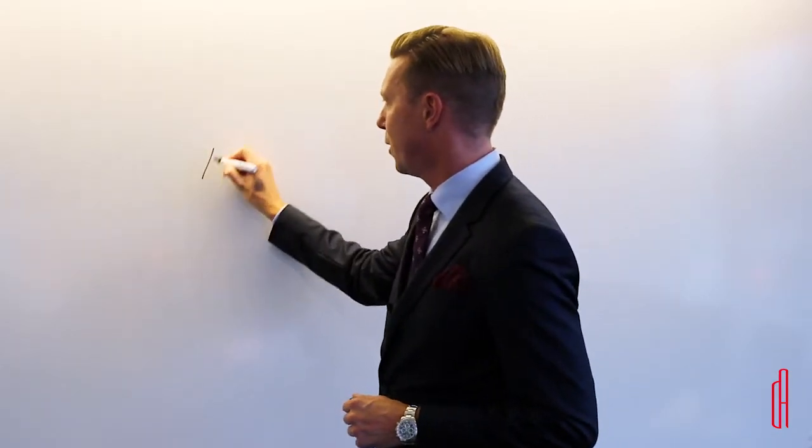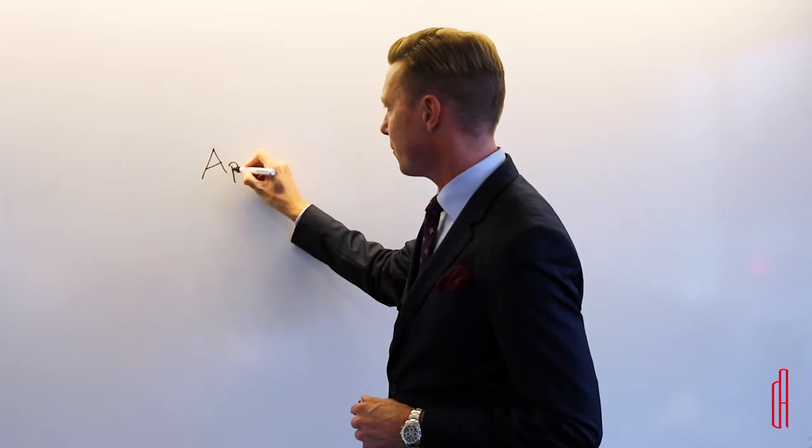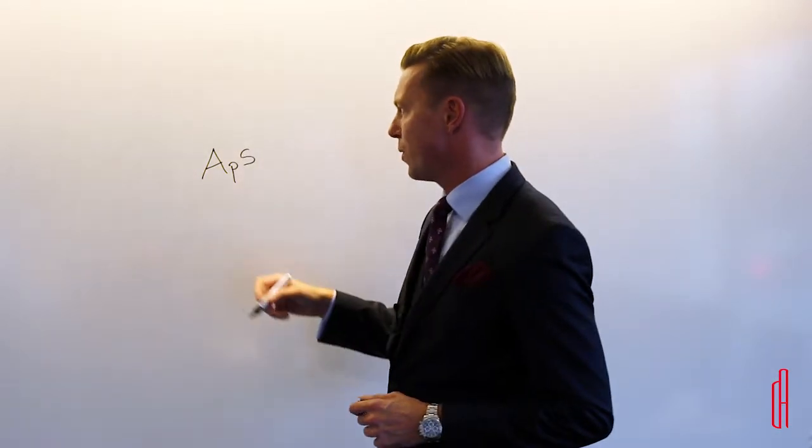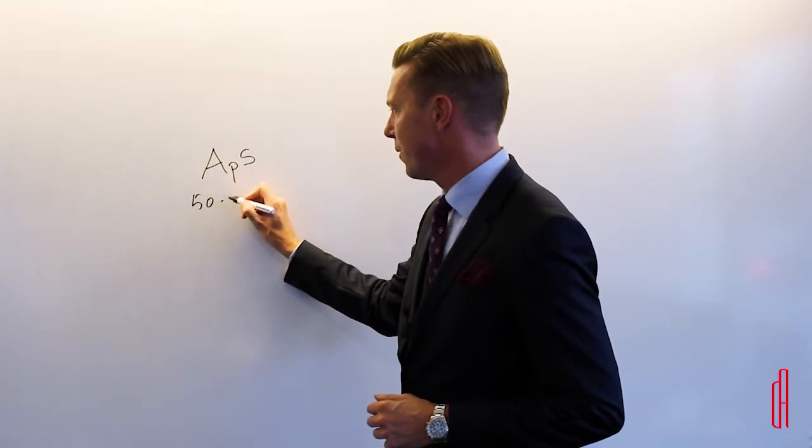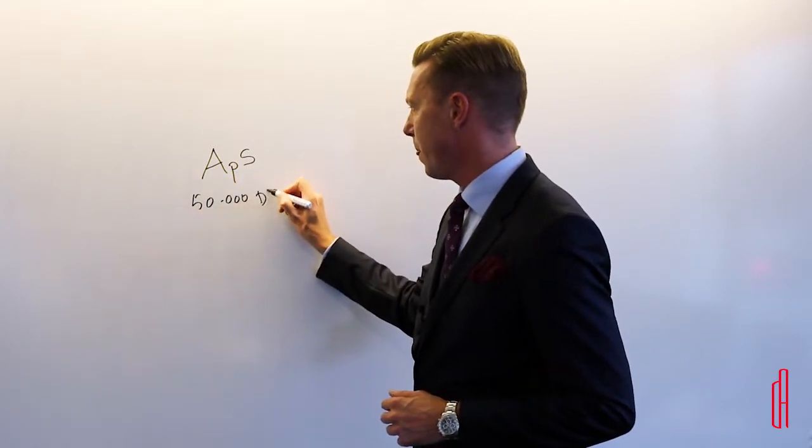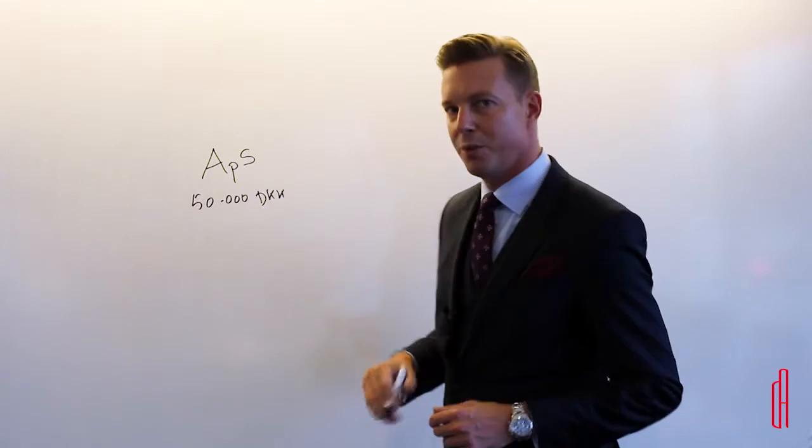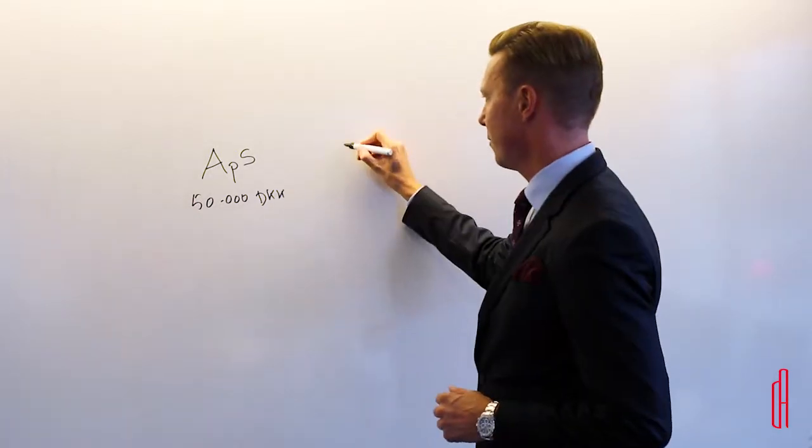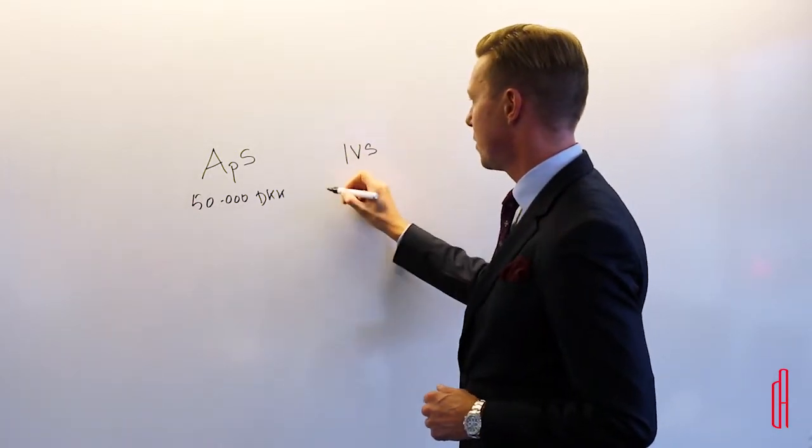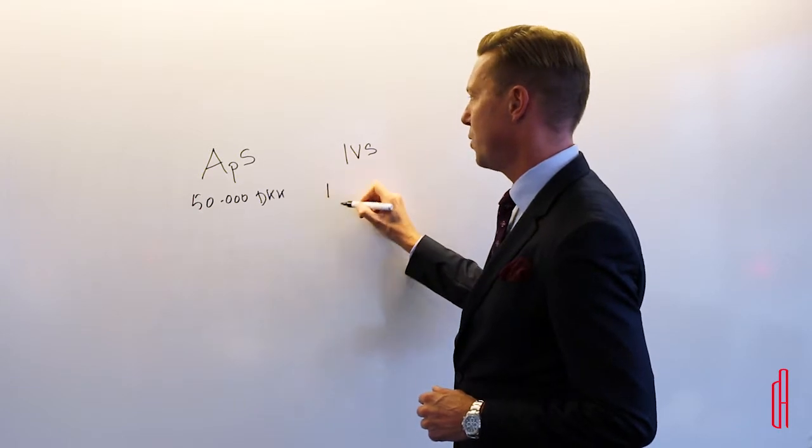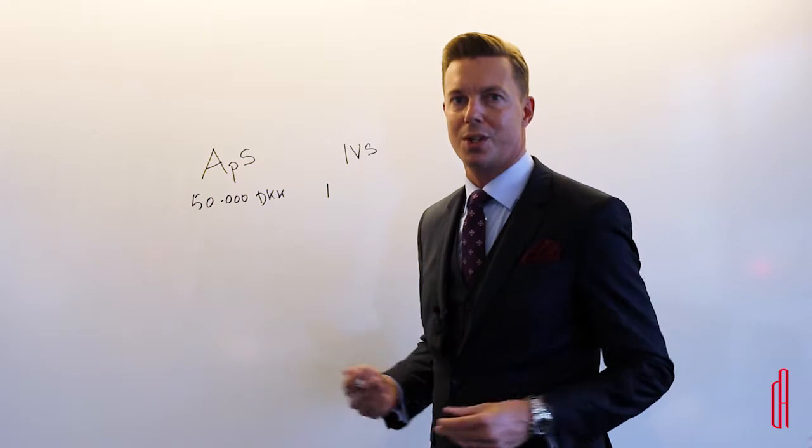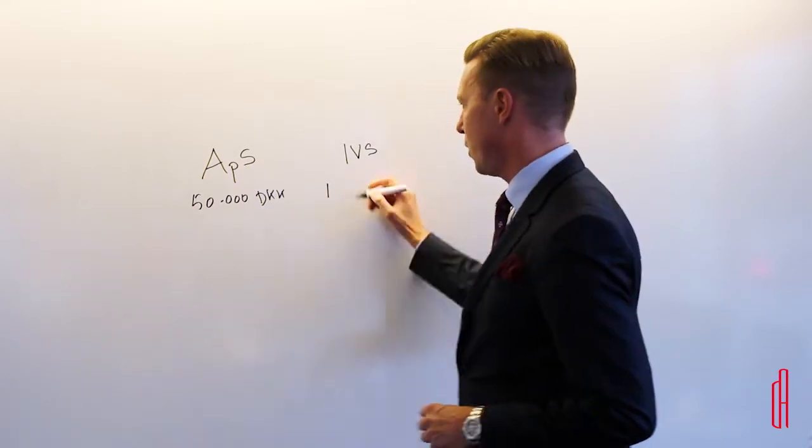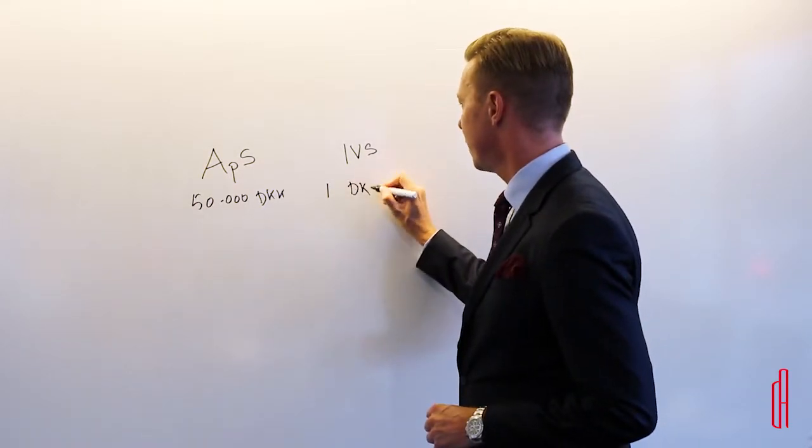To quickly illustrate, if we go back to the examples we had before, here we looked at an APS. The APS was the limited liability structure where we needed 50,000 Danish kroner in equity. And we also briefly discussed the IVS, which needs a minimum of one Danish kroner but up to 49,999. If we say one kroner, then I'll write like this.